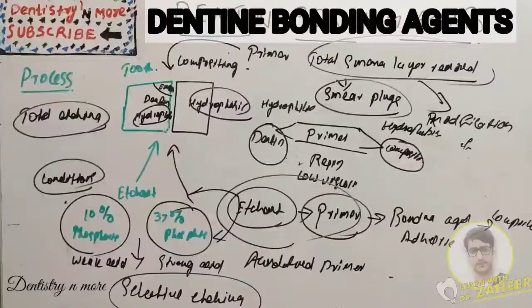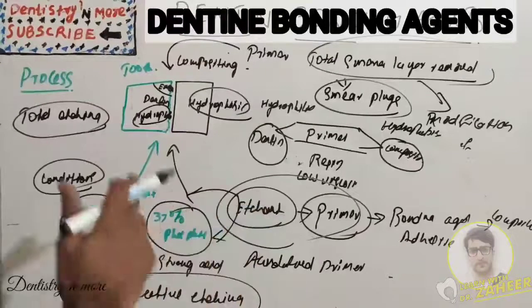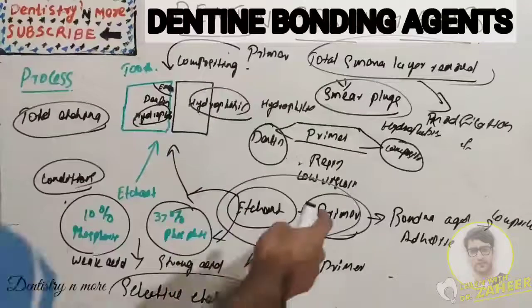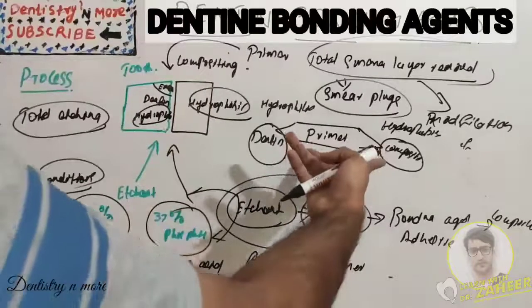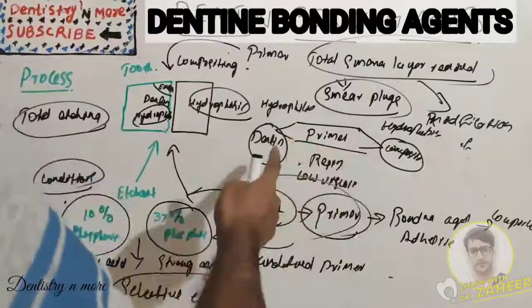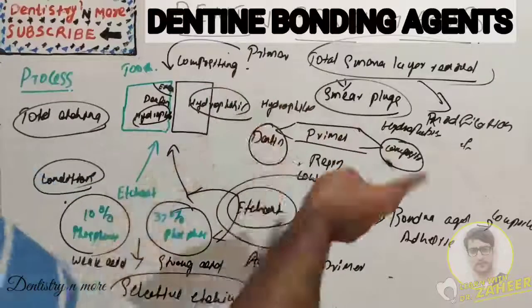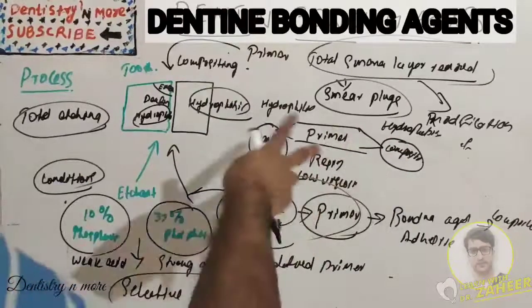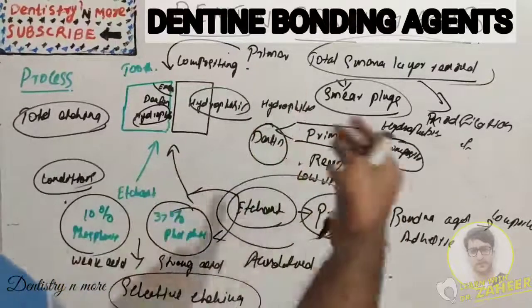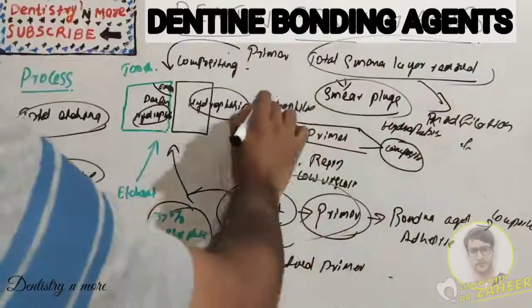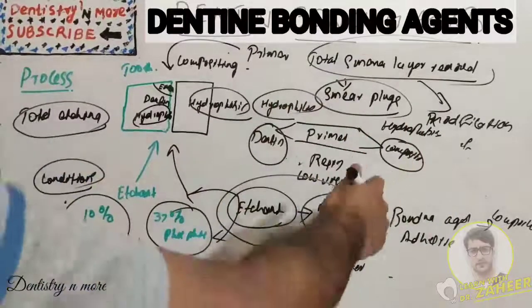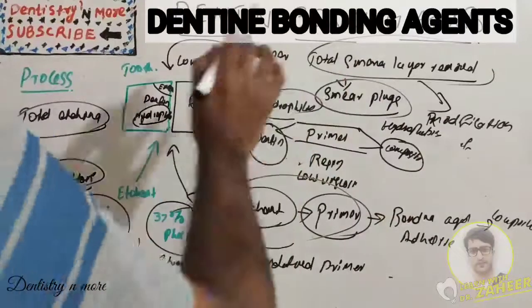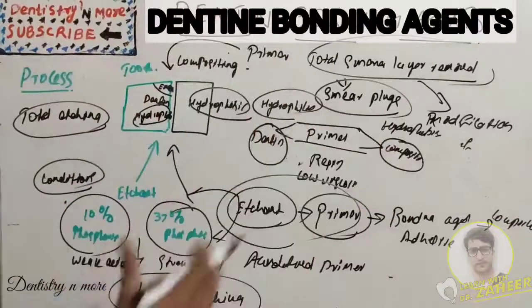After etchant, rinsing occurs and micro porosities are created. Then primer is applied, which has two ends - hydrophilic joining to dentin and hydrophobic joining to composite. Over that, bonding agent is applied. So we have learned about the smear layer, how this process works, and the selective etch and total etch concepts.